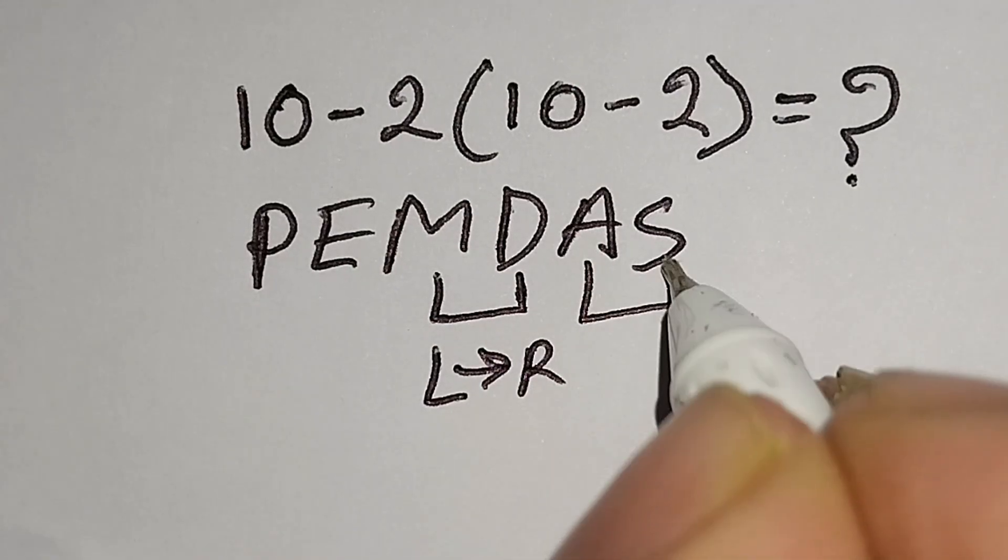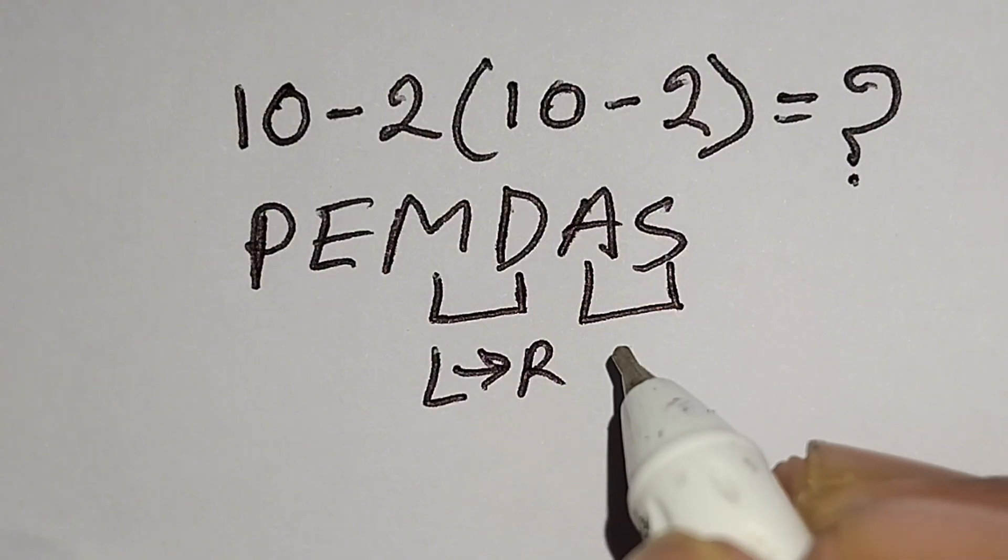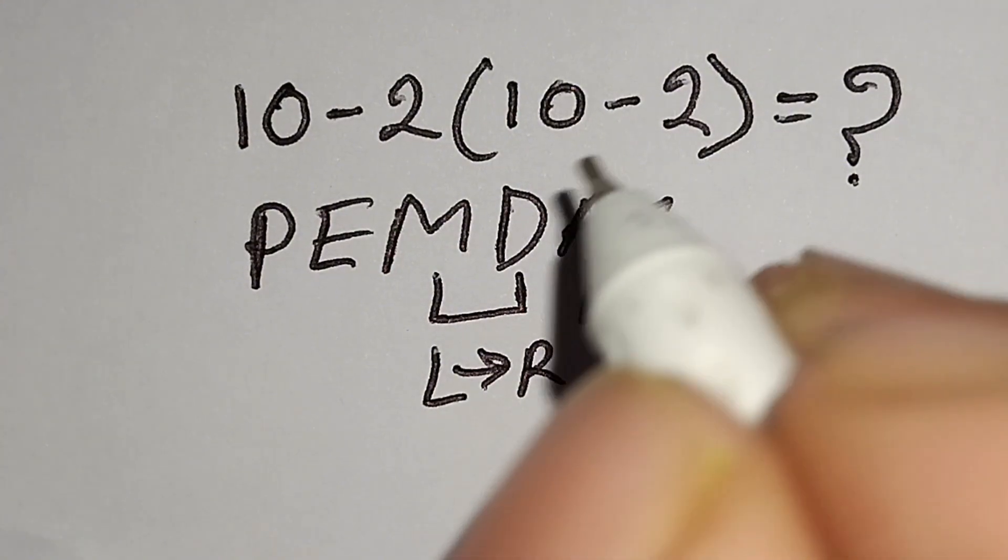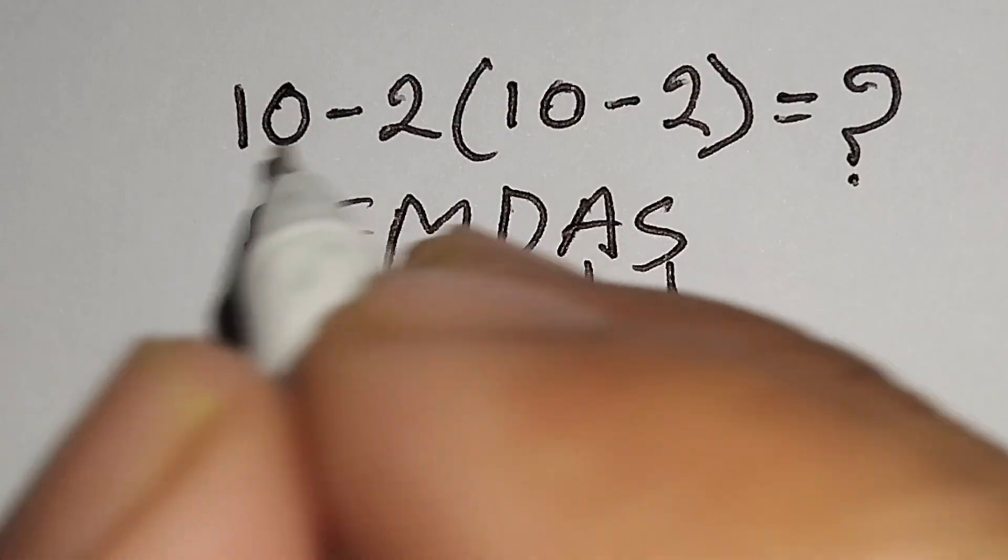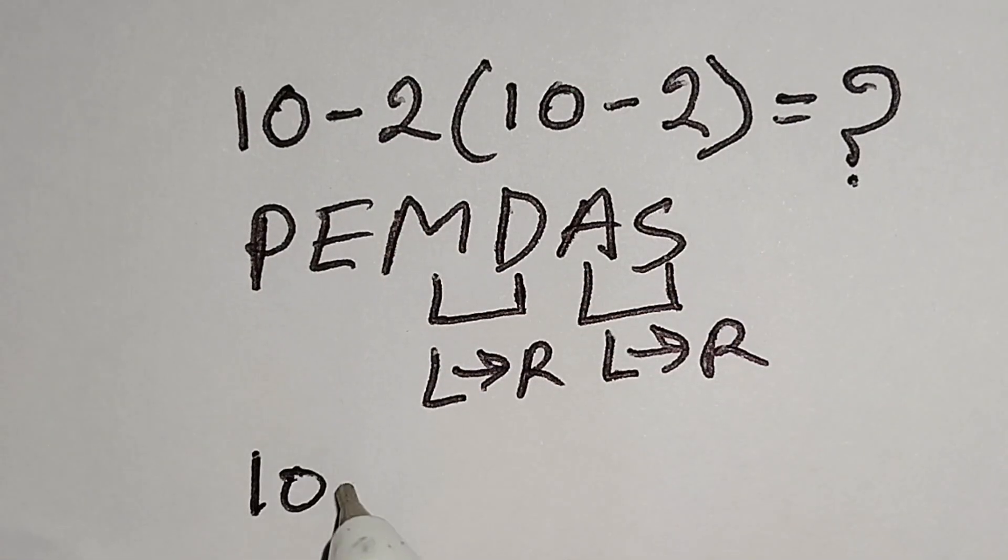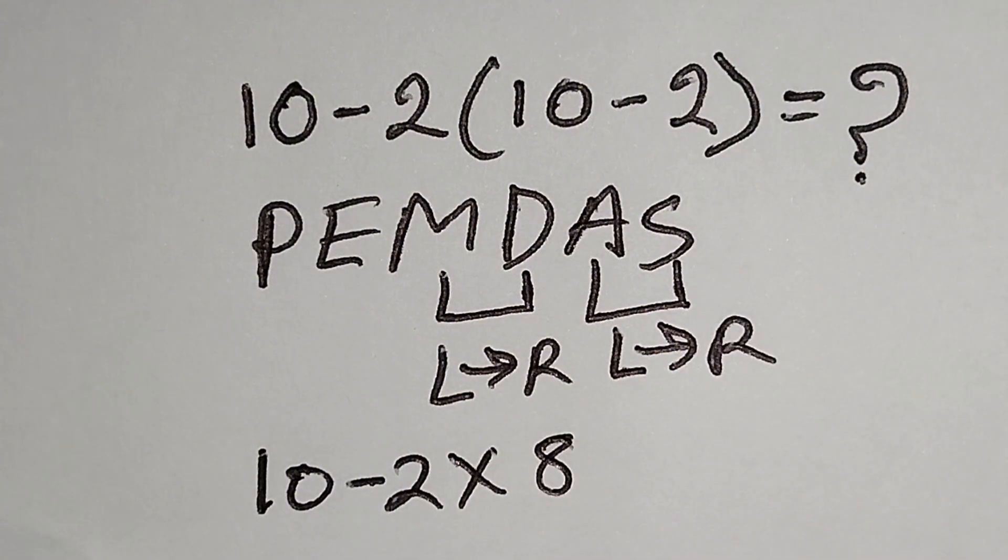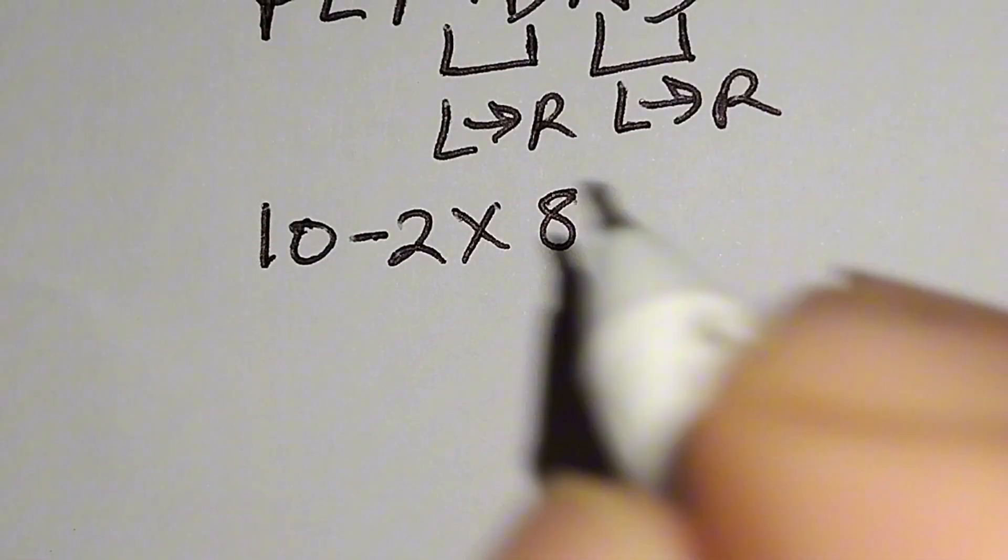And addition and subtraction have same priority, for this we have to work left to right. Now I have to work with this parenthesis here. 10 minus 2 gives us 8. Now I have to work with this multiplication.